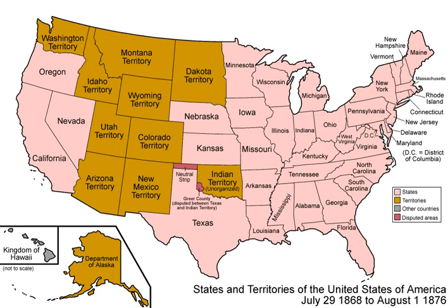Like the District of Columbia, territories of the United States do not have voting representation in the U.S. Congress, and they have no representation in the U.S. Senate. Every four years, U.S. political parties nominate their presidential candidates at conventions, which include delegates from these territories.